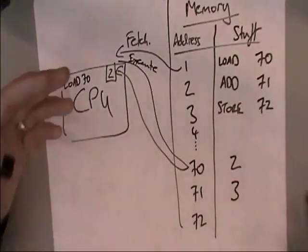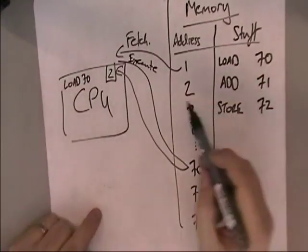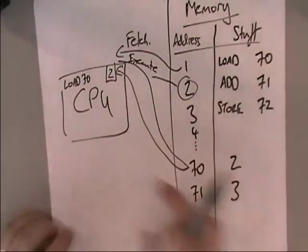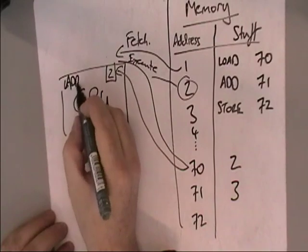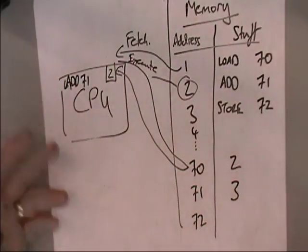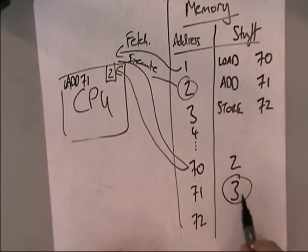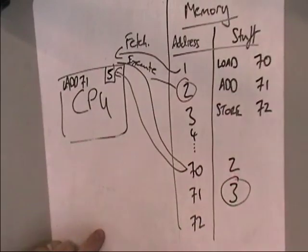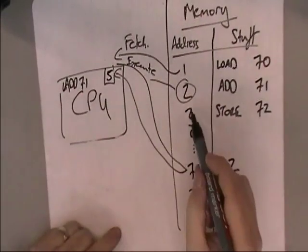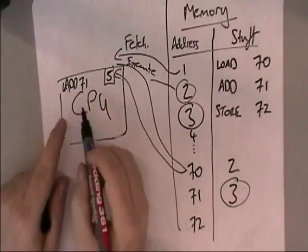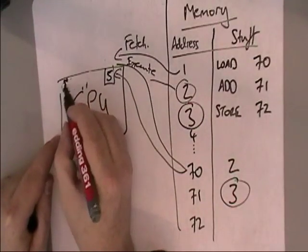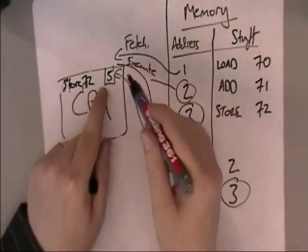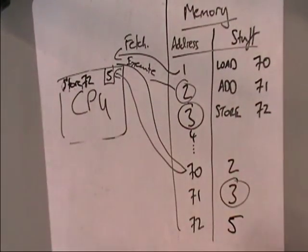We call this the fetch-execute cycle. The next thing we do is fetch the next instruction, which says add 71. So the instruction is add 71, then we execute that — we go and get the number from address 71, bring it back, and add it to what we already had. So 2 add 3 is 5. Then we fetch the third instruction: store 72. We execute that by writing the answer into memory address 72.